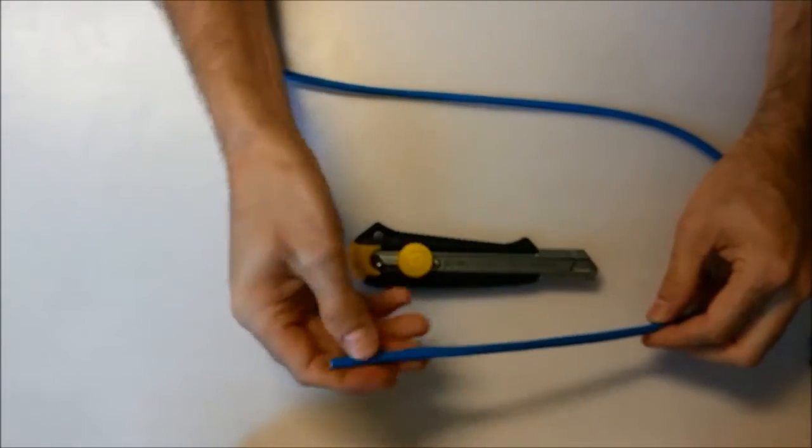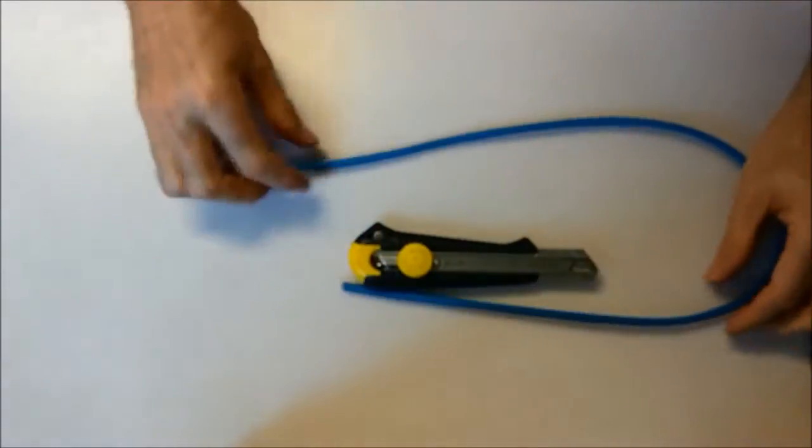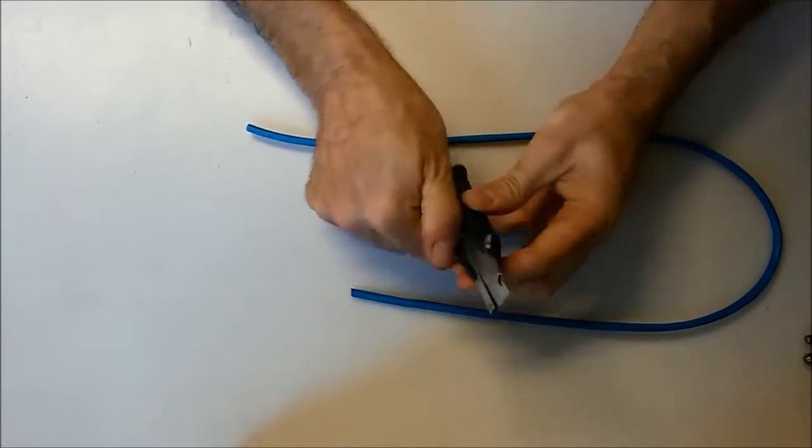So make sure you're using a multi-strand, and you'll see later on wire. You don't want the one that's stiff. So just grab a blade, and we're just going to slice open the end so we can get the wires out.